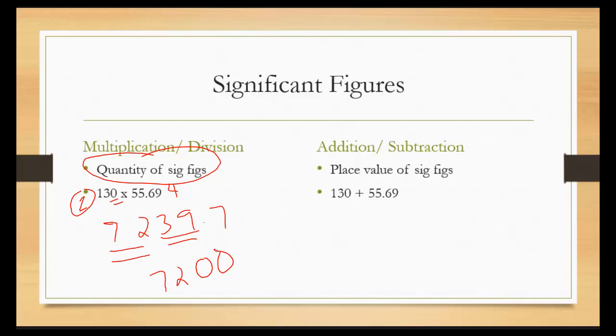For addition and subtraction, you're going to line up the decimal. So 130 plus 55.69. Add those together as normal and it comes out to be 185.69. Now look at the place value of the significant figures. For the 130, the tens place is the last significant digit. And the 55.69, the nine, which is the hundredths place, is the last significant figure. You cut the number off where you see from left to right the significant figures in first. So it ends at the tens place. So that means this is going to be rounded up to 190.